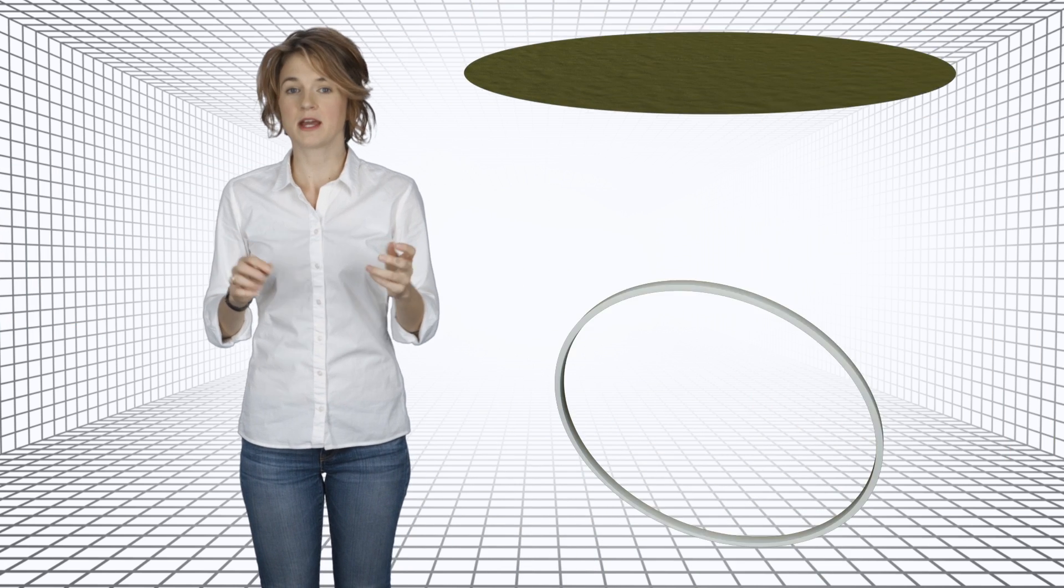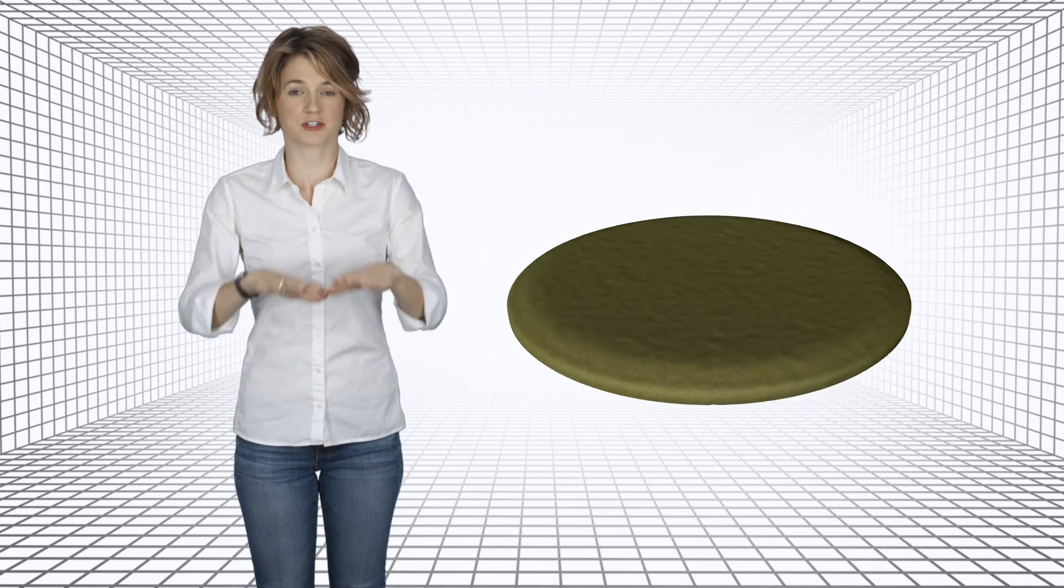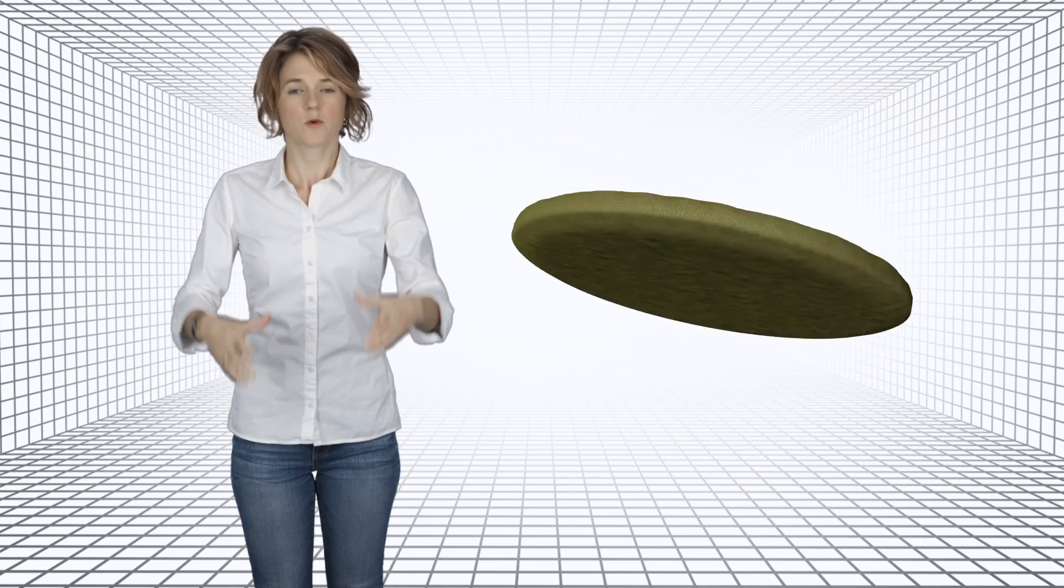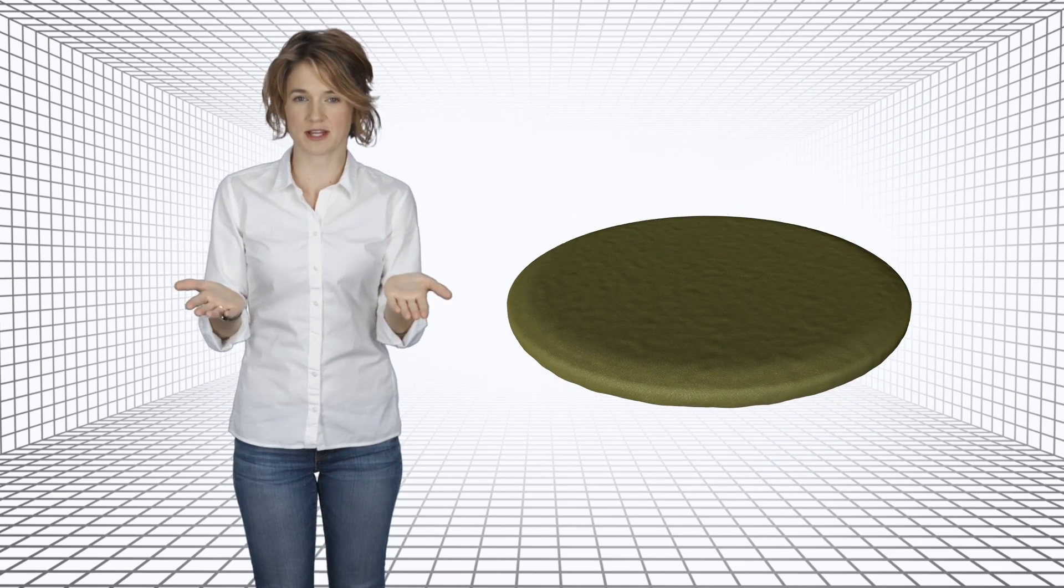When he talked about a drum, he really meant a simple piece of fabric stretched over a fixed boundary without the cylindrical body attached to it. But before we get to a drum, a two-dimensional vibrating membrane, let's start in one dimension, with a vibrating string.